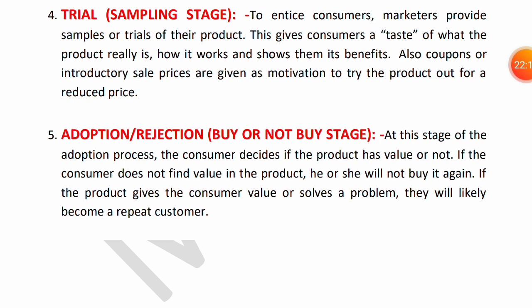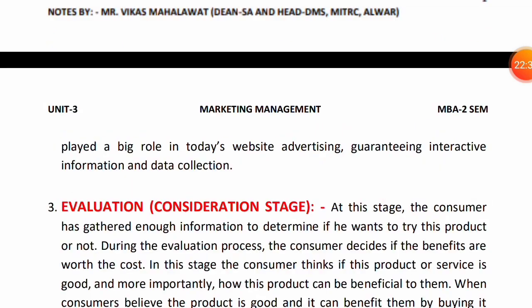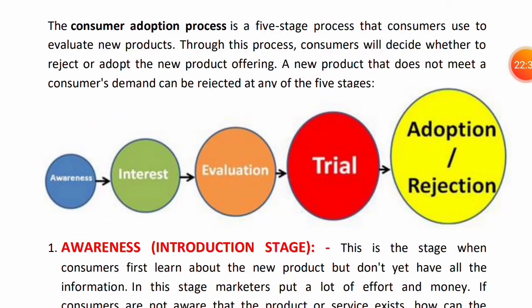Summary: Consumer Adoption Process का मतलब है वो stages जिनके through कोई भी consumer first time किसी innovative या new product के बारे में सुनता है और उसे finally adopt करता है — उन्हें हम Consumer Adoption Process बोलते हैं। यह Product Adoption Process के नाम से भी जाना जाता है। Consumer Adoption Process में total five stages होती हैं: first is Awareness, second is Interest, third is Evaluation, fourth is Trial, and fifth is Adoption or Rejection। Thank you very much.